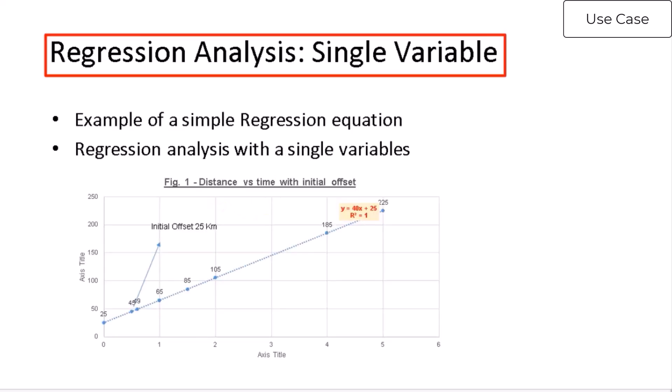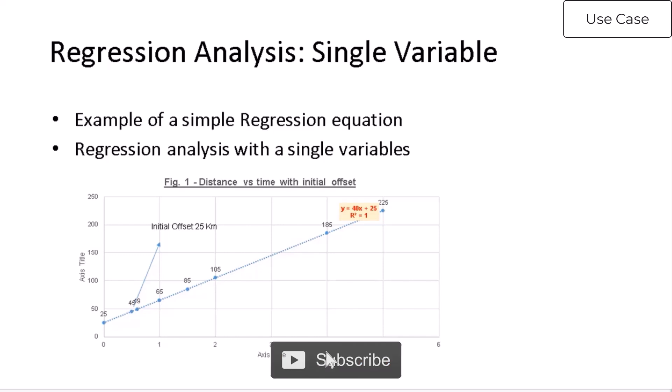Regression analysis single variable. Let us say we are trying to calculate how much distance a car will travel in so many hours, assuming it's running at a constant speed s km per hour. We know that the distance d in kilometers traveled by car in time t hours is given by speed s multiplied by time t hours. Given the constant speed of 40 km per hour, we can simplify this, saying d is a function of t or by an equation d equal to 40 into t.